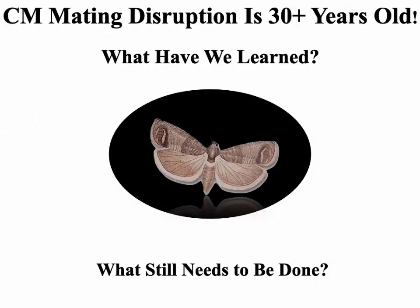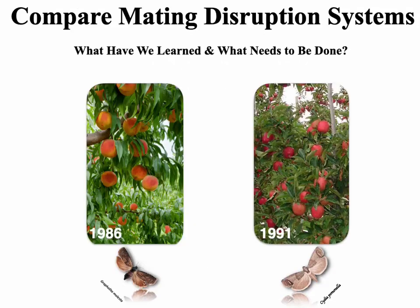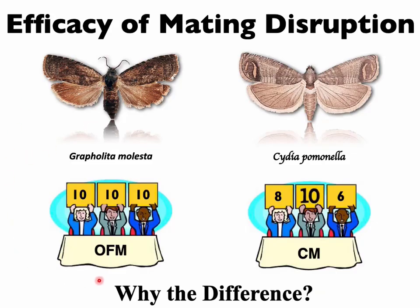Good morning everybody. Codling moth mating disruption is 30 years old. A tremendous amount of research has been done over the last 30 years, and I'd like to review some of the things we've learned and what still needs to be done. I'll do this by comparing oriental fruit moth mating disruption, first registered in 1986, and codling moth mating disruption, first registered in 1991. The efficacy of OFM mating disruption is quite robust — most people would give it a 10 out of 10 — while codling moth mating disruption is more variable.